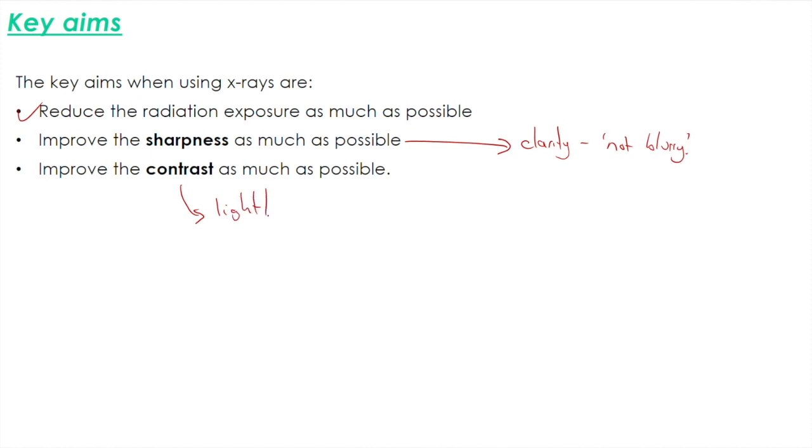The contrast means the difference between light and dark patches. When we talked about earlier we said that bone generally shows up as dark patches whereas flesh shows up as light patches. So the contrast is where we want to see the difference between those as easily as possible.